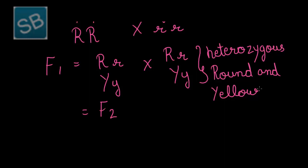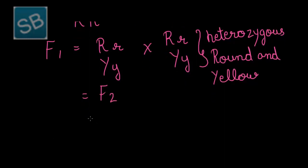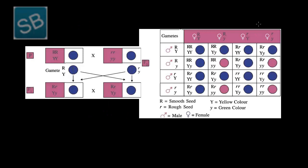This figure depicts the cross between parent plants resulting in F1, and the cross between F1 resulting in F2. When the F1 generation was crossed, it resulted in F2. The parent plants when crossed yielded F1 that is heterozygous round and yellow-shaped seeds.